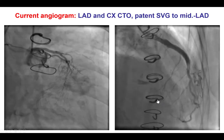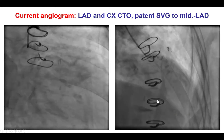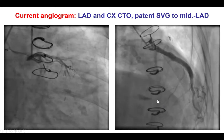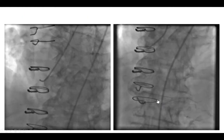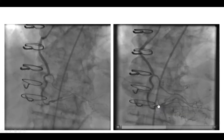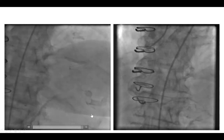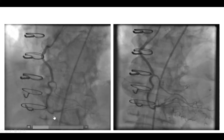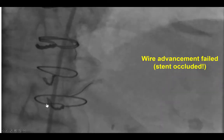In the current presentation, the left main as well as the vein graft to the LAD were about the same as they were before. However, there appeared to be a significant lesion in the distal RCA close to the area of the previously placed stent.